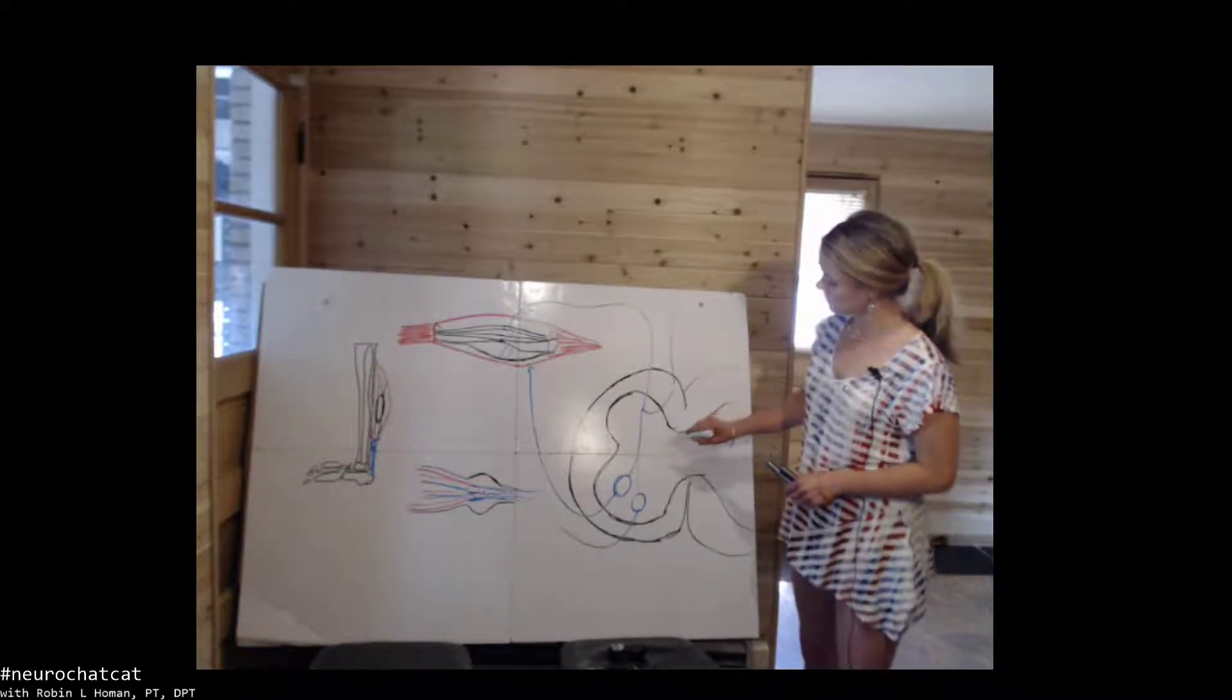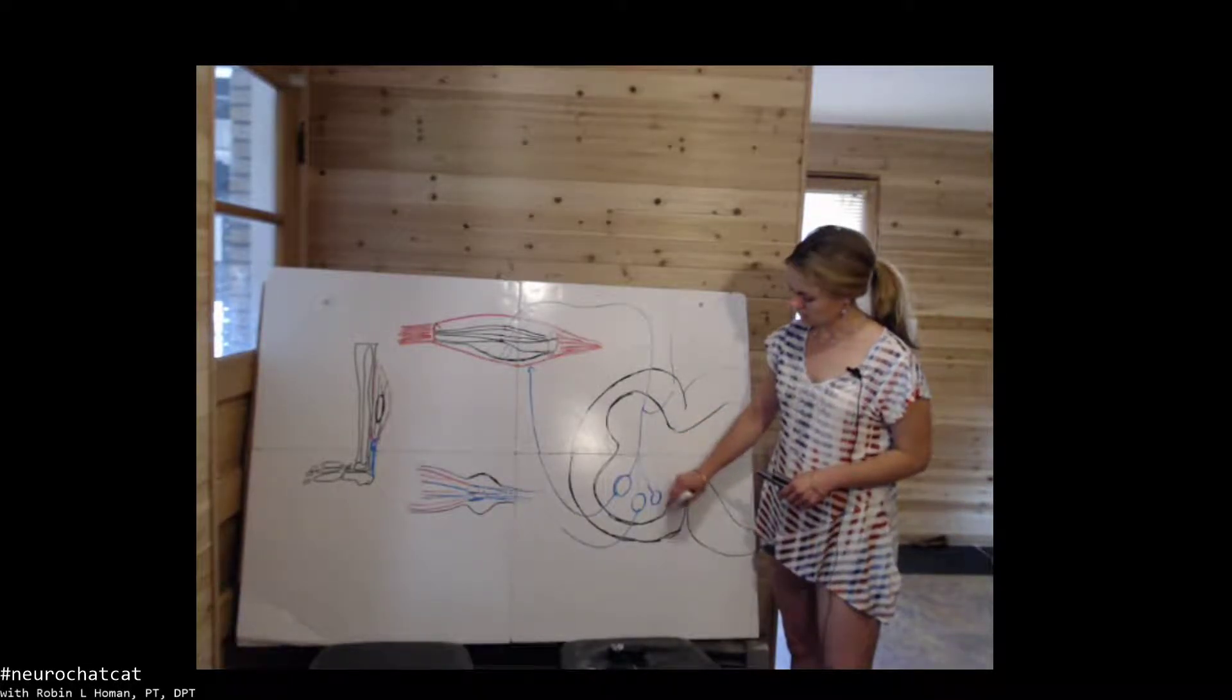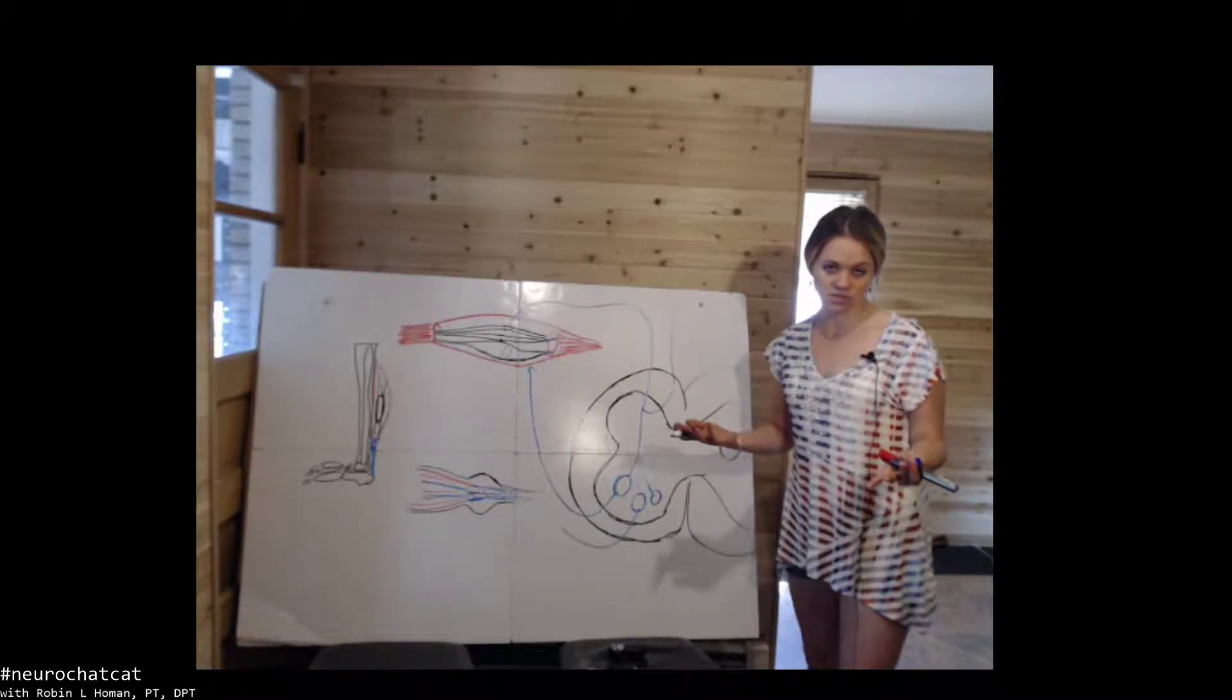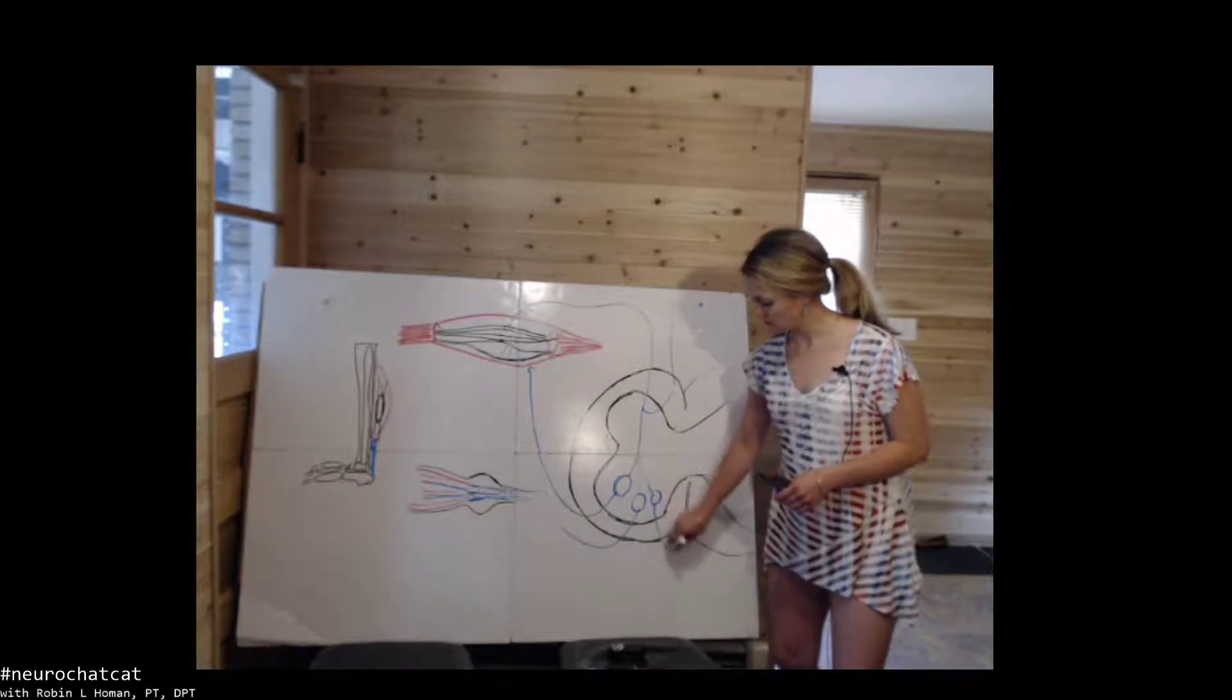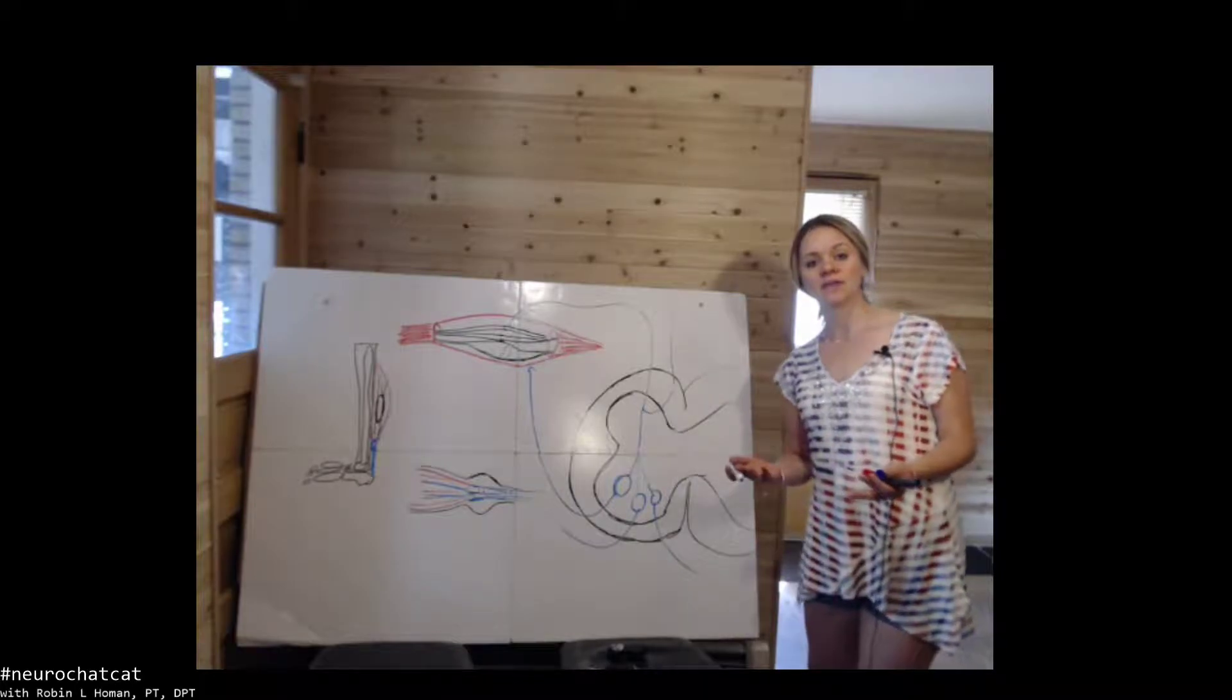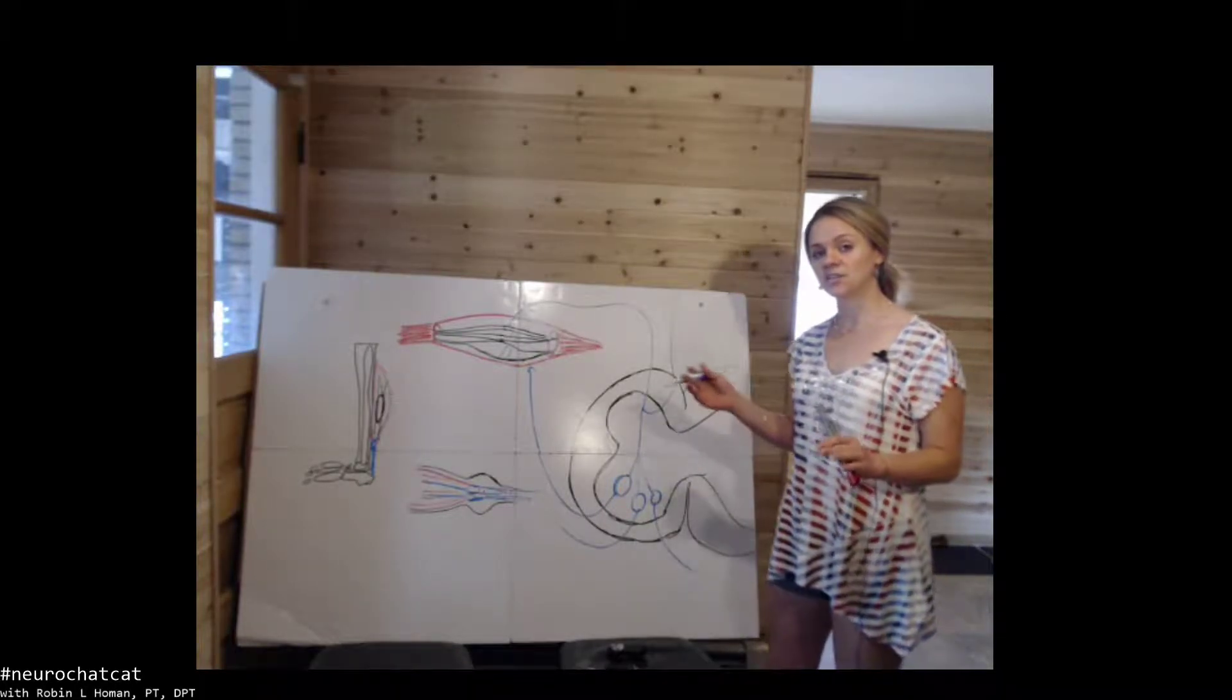And also it synapses on the antagonist muscle, which in this case could be the anterior tibialis. And it says, hey, soleus is being lengthening really quickly. You need to relax so that we can elicit a plantar flexion response.